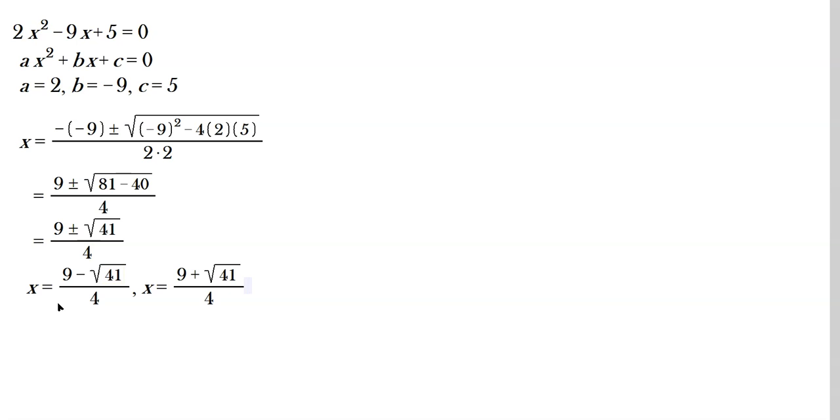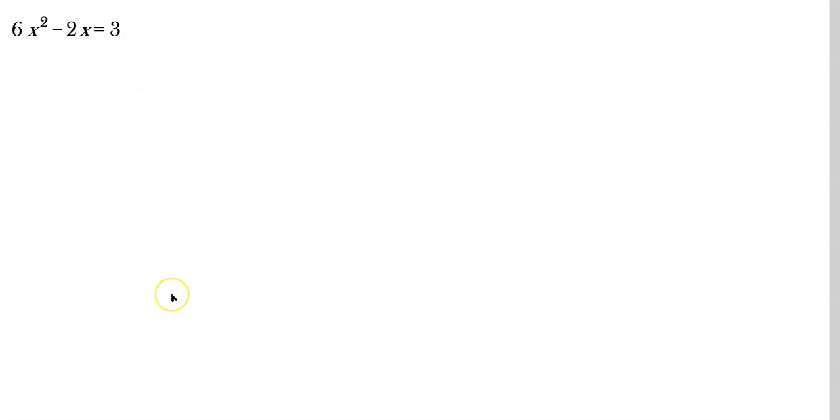So x is either (9 minus square root of 41) divided by 4, or x is (9 plus square root of 41) divided by 4. There are two separate values of x.